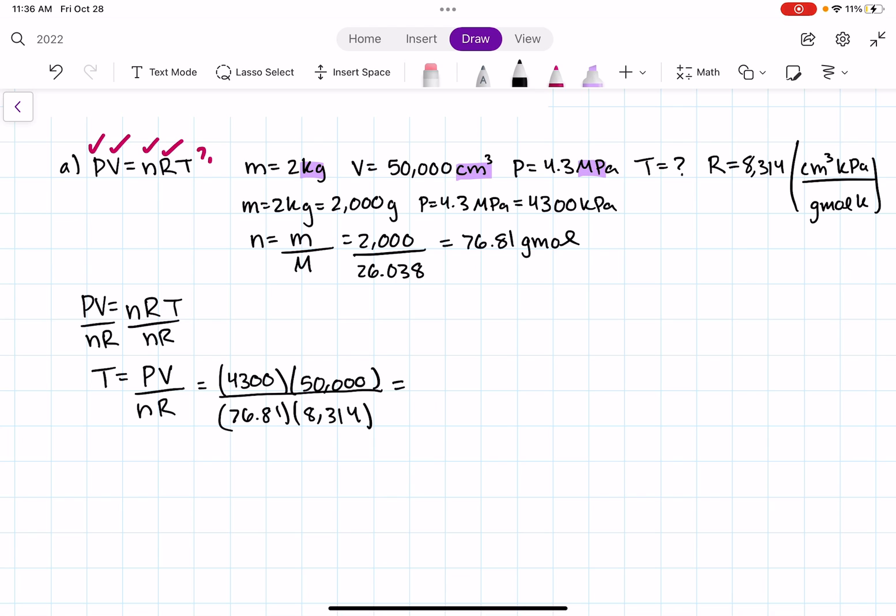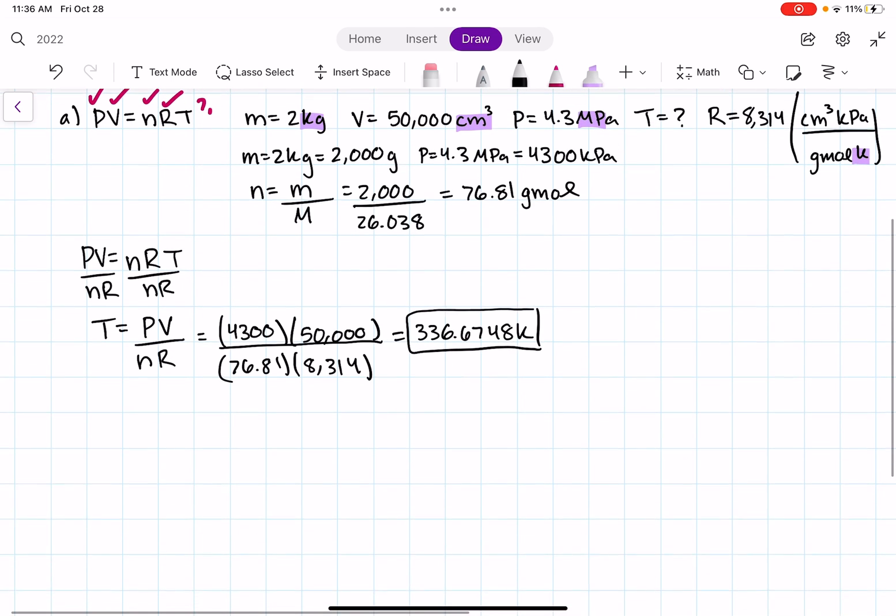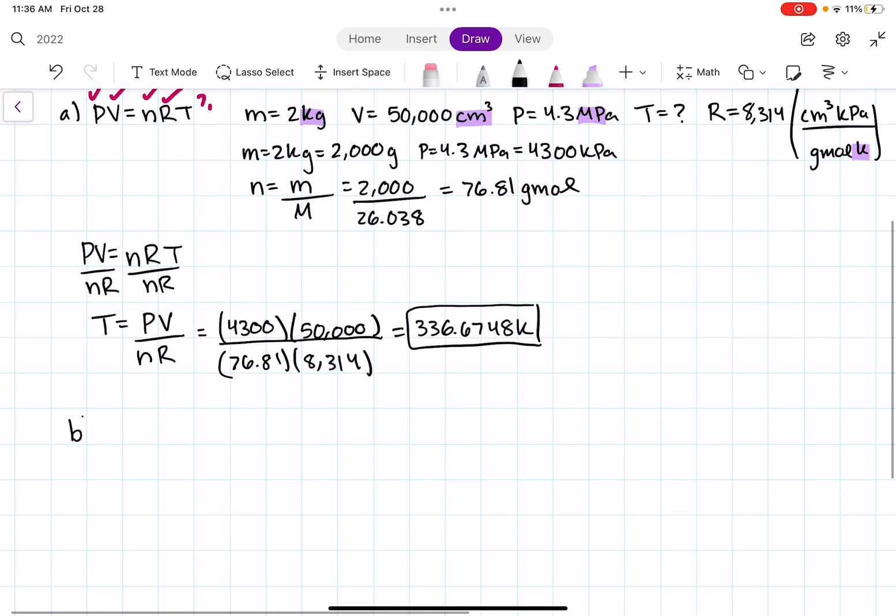we get the value of 336.6748 Kelvin. And we know it's in Kelvin because that's the value in our R value. So that's great. We solved for temperature using the ideal gas equation. So let's go ahead and move on and use the VanderWaal's equation of state.